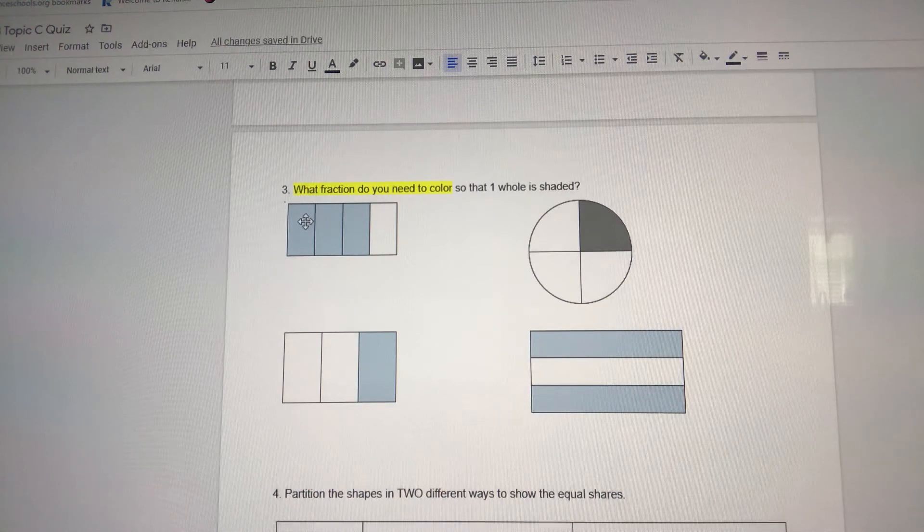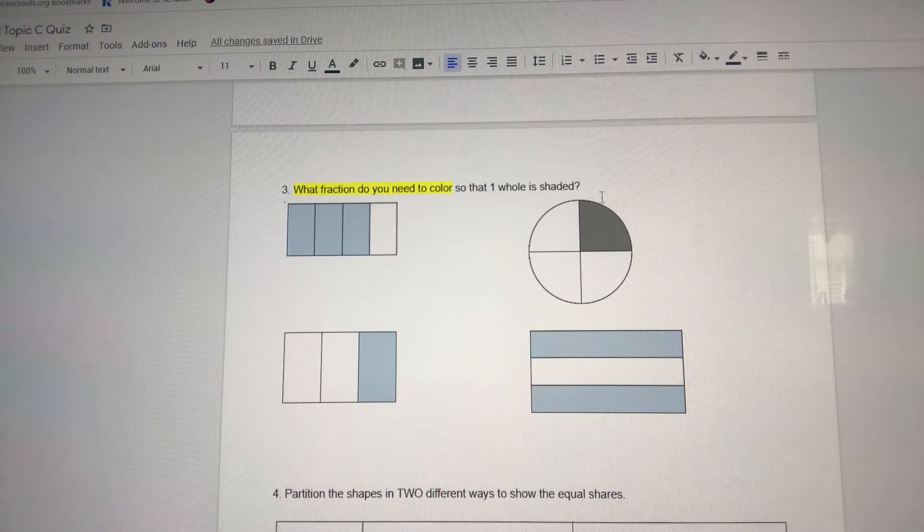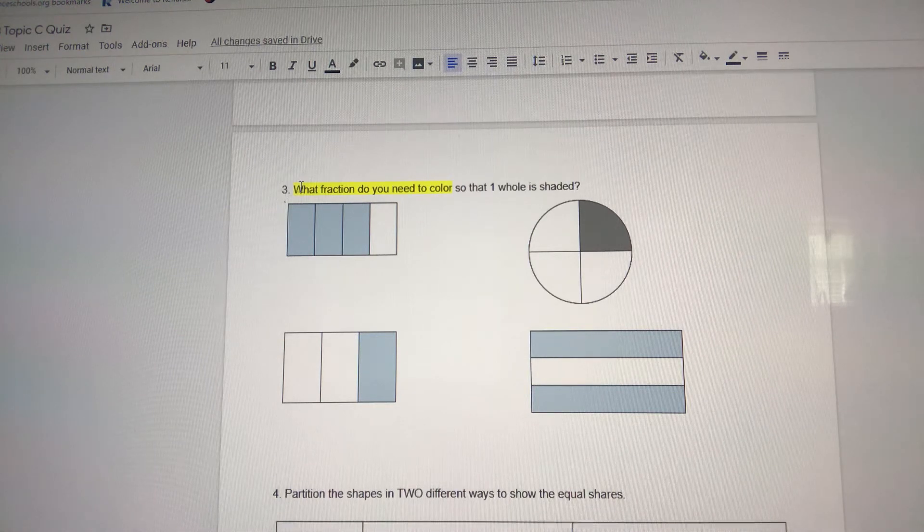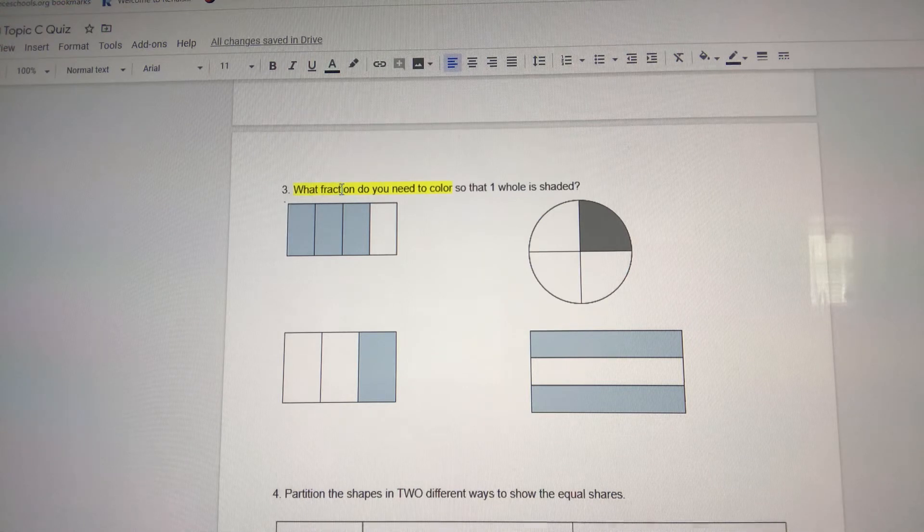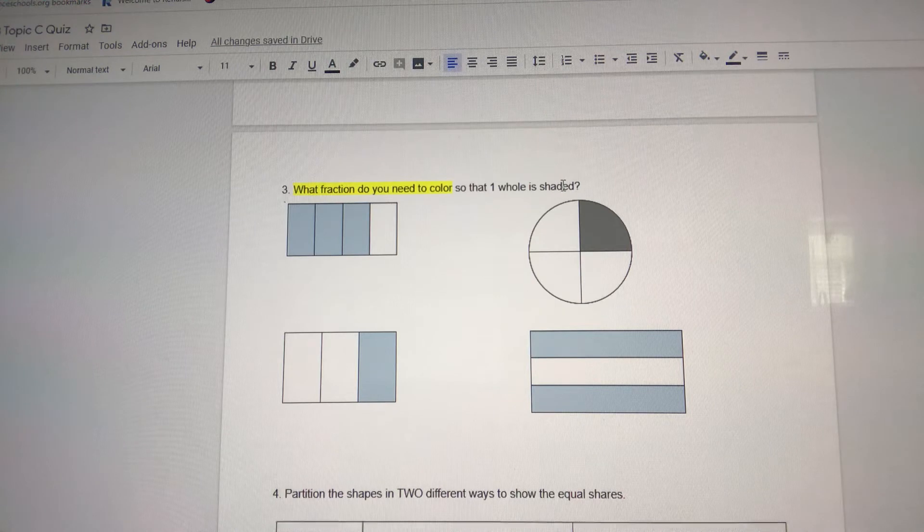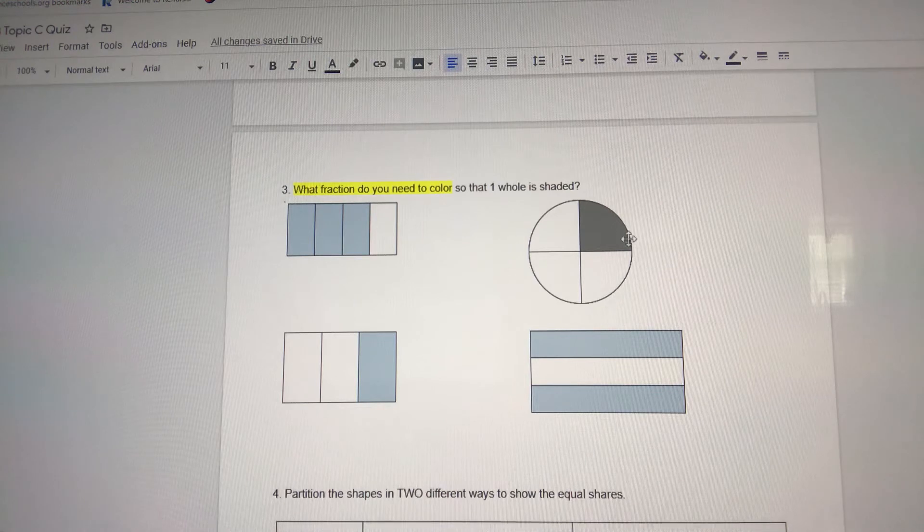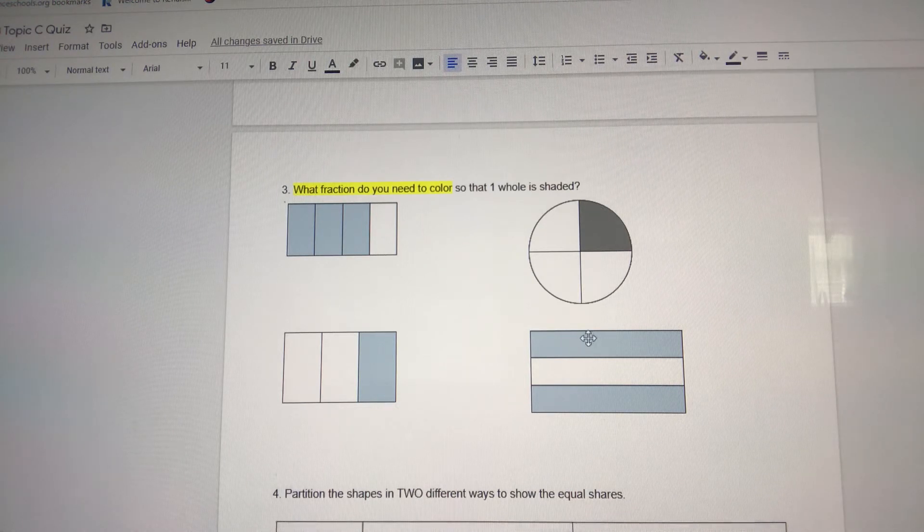For question three, which is this rectangle, this circle, this rectangle, and this other rectangle, you are doing something different. You are telling me what fraction of the shape do you need to color so that one whole of the shape is shaded. How many pieces do you need to shade here? How much of the shape do you need to shade here?